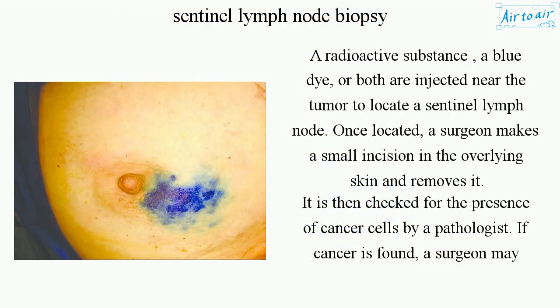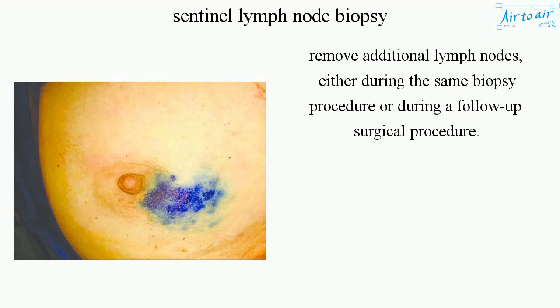A radioactive substance, a blue dye, or both are injected near the tumor to locate a sentinel lymph node. Once located, a surgeon makes a small incision in the overlying skin and removes it. It is then checked for the presence of cancer cells by a pathologist. If cancer is found, a surgeon may remove additional lymph nodes, either during the same biopsy procedure or during a follow-up surgical procedure.